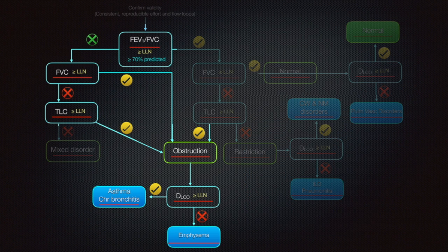If you are given DLCO values, you can differentiate conditions like asthma or chronic bronchitis where diffusion capacity is preserved, and conditions like emphysema where gas exchange surfaces are destroyed, resulting in low DLCO values.